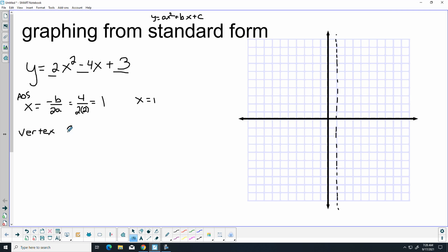Well, I already know the x coordinate of the vertex because it has to lie on the line of symmetry. I need to know y, so I'm going to put y equals, and then I just take that one and I plug it in.